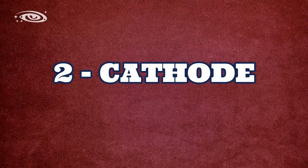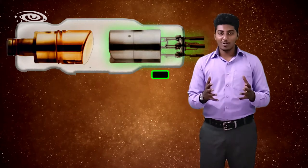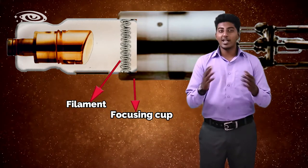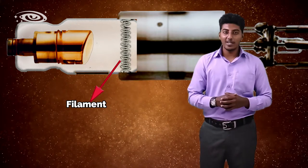Now we will see about the cathode. Cathode is the negative side of the x-ray tube and is made up of two primary parts: the filament and focusing cup.